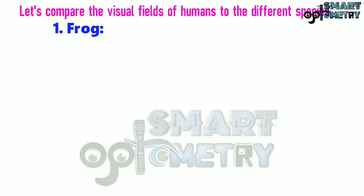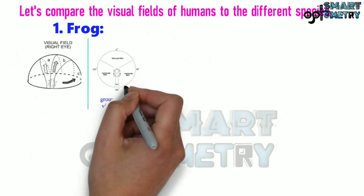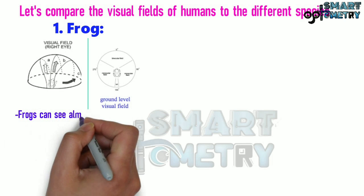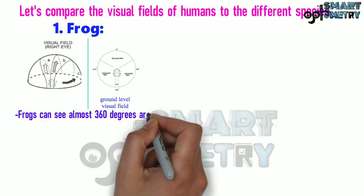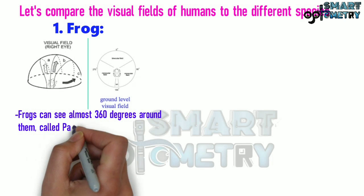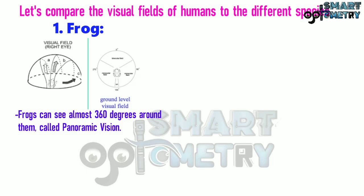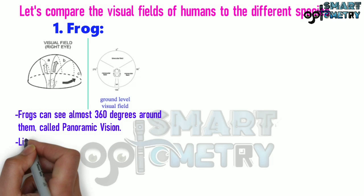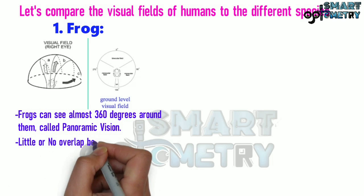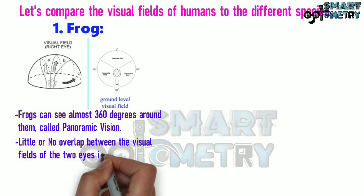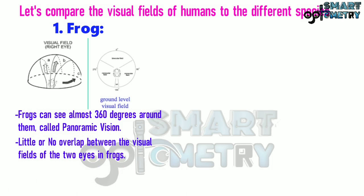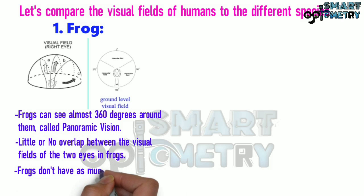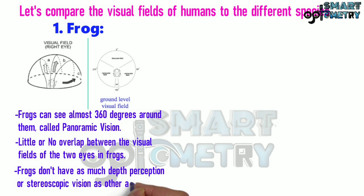1. Frog: frogs can see almost 360 degrees around them, and this type of vision is called panoramic vision. There is little or no overlap between the visual fields of the two eyes in frogs. Frogs don't have as much depth perception or stereoscopic vision as other animals do.